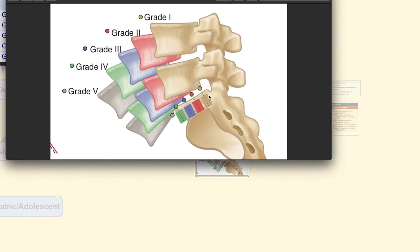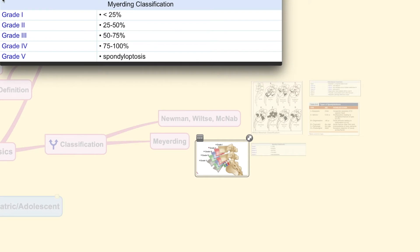And the slippage is usually determined from the posterior aspect of the vertebral body, and it is being compared to the vertebral body that is beneath it. As you can see here in the grade 5, in the grey-colored vertebrae, the whole vertebrae has slipped out of its place and therefore the percentage of the slippage is over 100%.